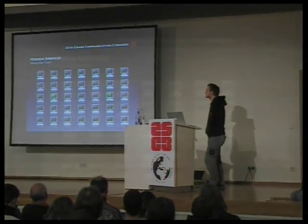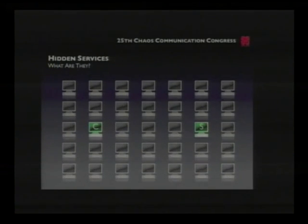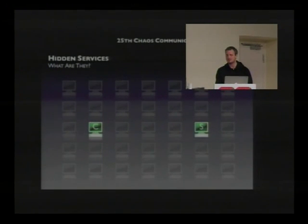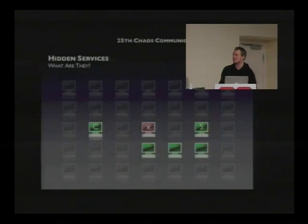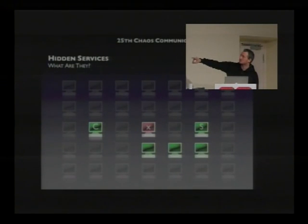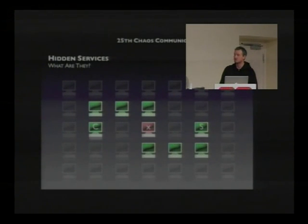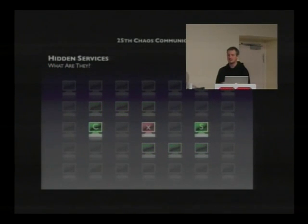How do the client and server find each other? To stay simple: the server and the client each connect through their own Tor circuit to a rendezvous node, which exchanges data between them. In fact this is a bit more complicated, but this describes the technology quite well. The rendezvous node sticks the two together and exchanges data between them.